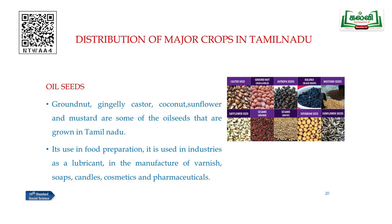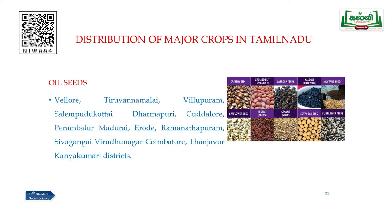Next, we move to oil seeds. Groundnut, gingelly, castor, coconut, sunflower and mustard are oil seeds grown in Tamil Nadu. They are used for food preparation, and in industries as a lubricant and in the manufacturing of varnish, soaps, candles, cosmetics and pharmaceuticals. Key oil seed-producing districts include Vellore, Thiruvannamalai, Villupuram, Salem, Pudukkottai, Dharmapuri, Cuddalore, Perambalur, Madurai, Erode, Ramanathapuram, Sivagangai, Virudhunagar, Coimbatore, Thanjavur and Kanyakumari.